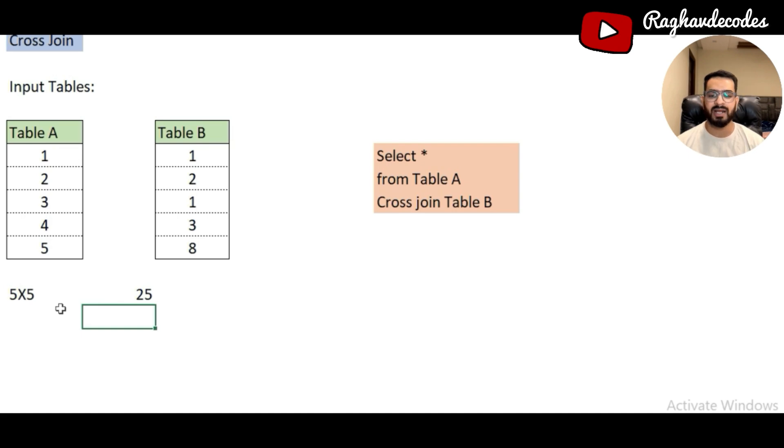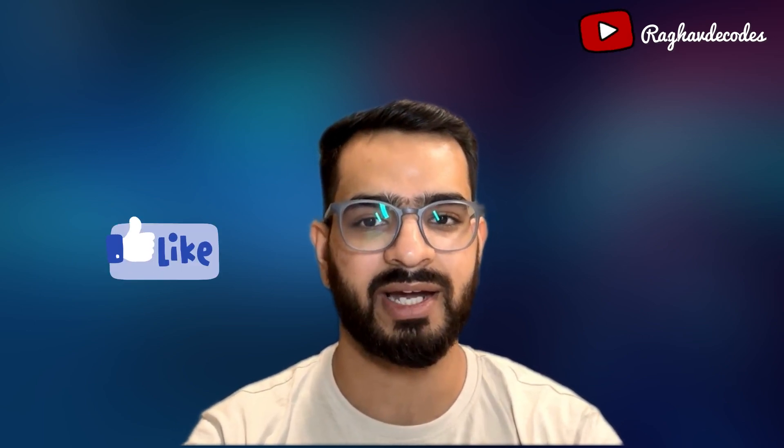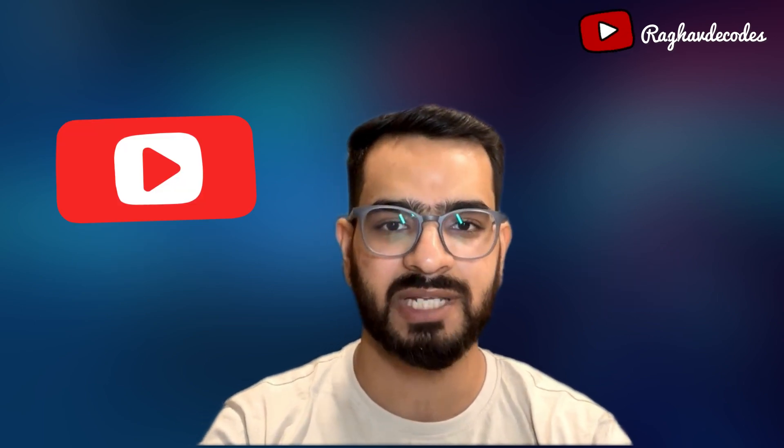There's a small task for you: if you understand the output of the cross join, try writing the output in the comments below and I'll validate it. Hope you were able to understand the logic behind all types of joins, how they work, and what happens when you encounter duplications. If you have any doubts, write them in the comment section. If you found this video helpful, please like, share, and subscribe. I'll be sharing more videos about frequently asked SQL questions. Thank you!